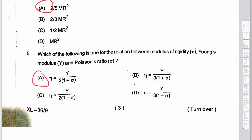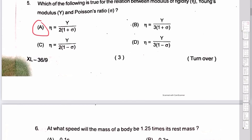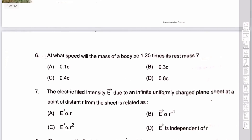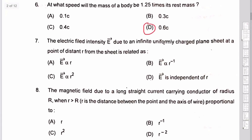We are confused by question number 5. The question about rest mass: option D is 0.6. Then number 7: the electric field of an infinitely uniformly charged plane sheet is equal to σ/ε. Option D is that the field is independent of distance.